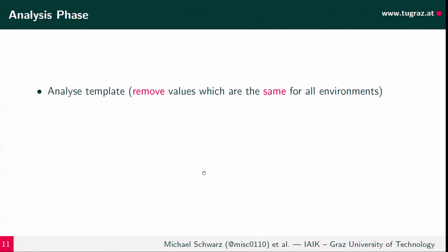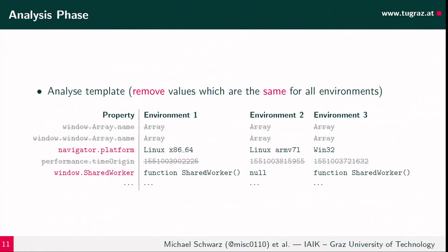To analyze the template, we first remove values that are the same for all environments — if a property value doesn't change when we change the environment, it gives us no information about the environment; it's just a static value. For example, the name of an array is 'Array' on all environments, so we simply remove that. After removing all the same values, we are left with properties that are actually different because of the environment.